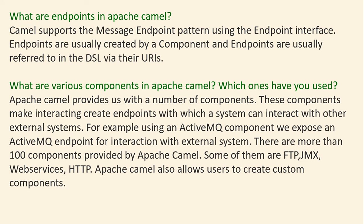What are the various components in Apache Camel and which ones have you used? Apache Camel provides a number of components that create endpoints for interacting with external systems. For example, using the ActiveMQ component, we expose an ActiveMQ endpoint for interaction with external systems. There are more than 100 components, including FTP, JMX, Web Services, and HTTP. Apache Camel also allows users to create custom components.